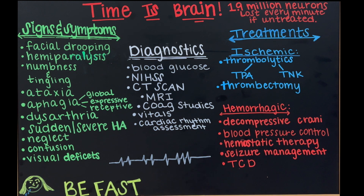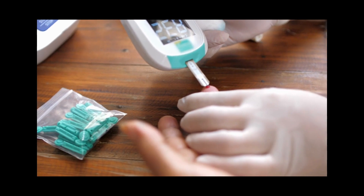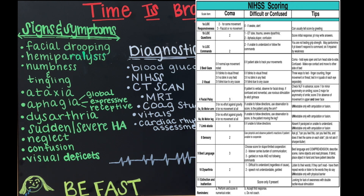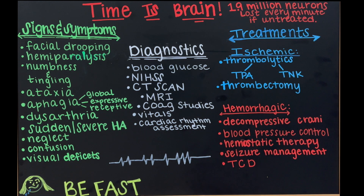For diagnostics, first and foremost everyone needs a blood glucose check, because low blood sugar can mimic stroke symptoms almost identically — don't overlook the simple things. Next, perform an NIH stroke scale if that's used at your facility. This assesses how severe a stroke is and gives a baseline to reassess later. EMS may use the Cincinnati scale, which is a simpler form.